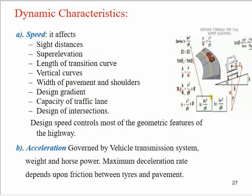Now the dynamic characteristics. First is speed. Speed affects: the sight distance, the super elevation provided at curves on the road, the length of the transition curve (that is the ease with which the driver can move the vehicle from a straight road to a circular curve), the vertical curves, the width of the pavement and shoulder, the design gradient, the capacity of the traffic lane, the design of intersections, and lastly the design speed, which controls most of the geometric features of the highway.